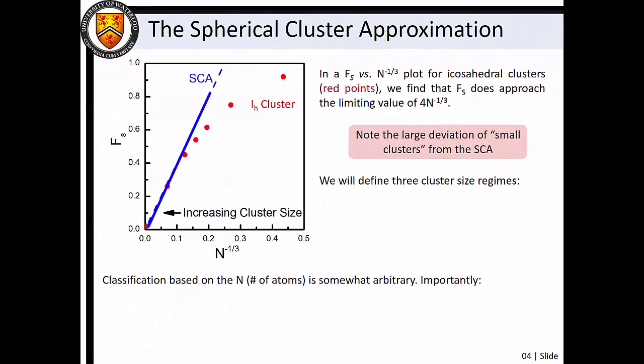The blue dashed line shows the SCA prediction of FS as a function of one over the cube root of n. The exact values of FS for several pseudo-close-packed icosahedral clusters is plotted in red data points.